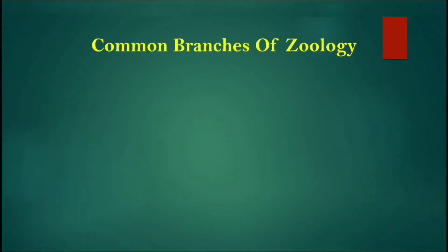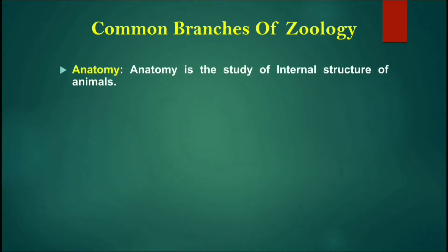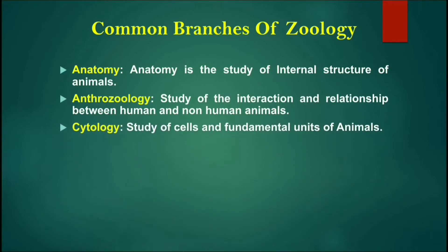Let's know about some common branches of Zoology. First is Anatomy — in Zoology, Anatomy is the study of the internal body structure of animals. Next, Anthrozoology, known as human-non-human animal studies, is the study of the interaction and relationship between humans and non-human animals. Next, Cytology — as mentioned in a previous video, Cytology is the study of cells and fundamental units of living things, and in Zoology it refers to the study of animal cells.